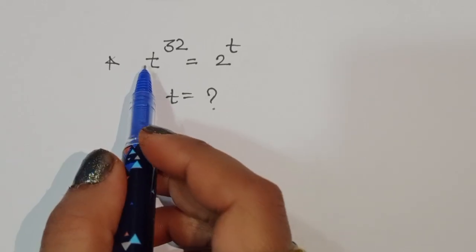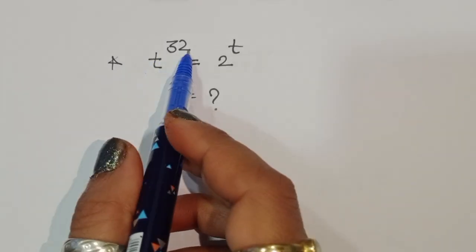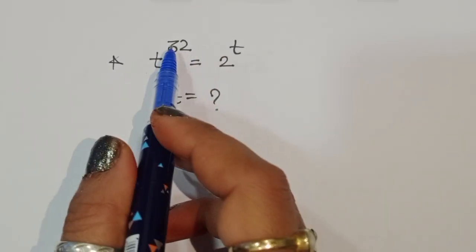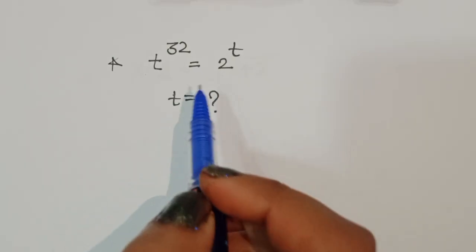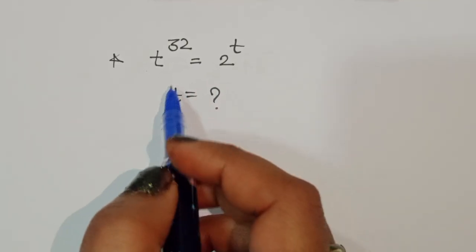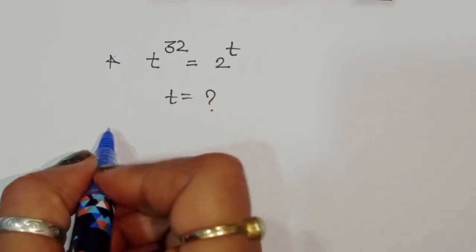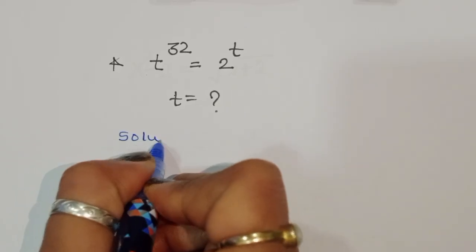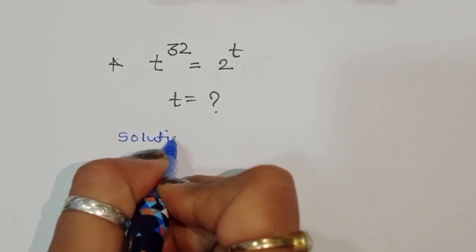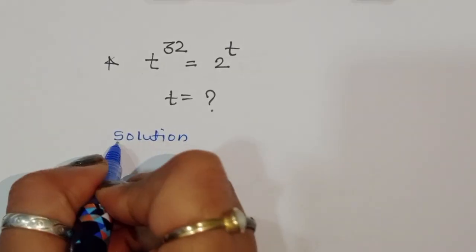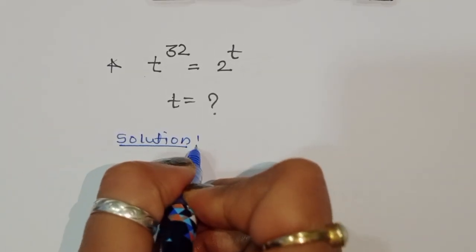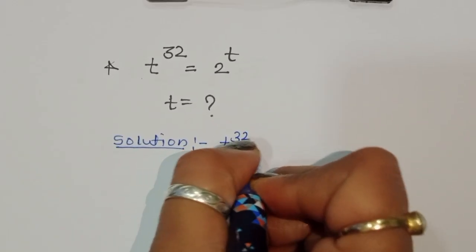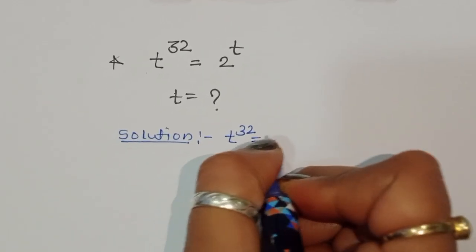The question is: t power 32 is equal to 2 power t. So we have to find out the value of t. Let's see the solution.